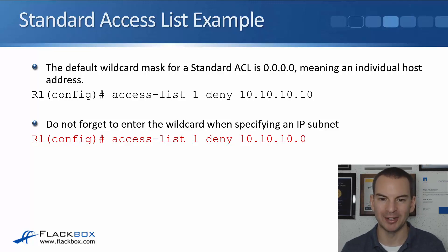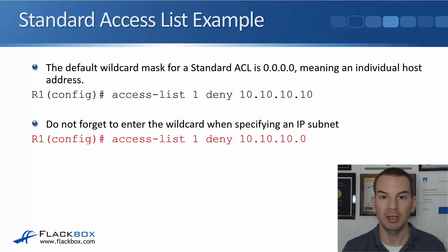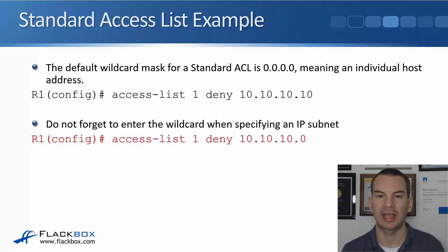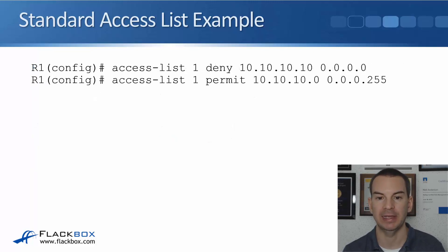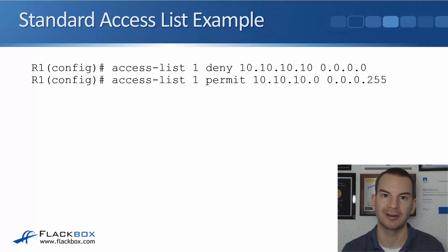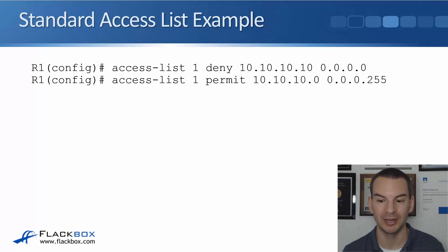Don't forget to enter the wildcard when specifying an IP subnet, not just an individual host. The command line will allow you to enter 'access-list 1 deny 10.10.10.0' with no wildcard mask, but this would not match anything and would be an error. When you're specifying a subnet, like the second line 'access-list 1 permit 10.10.10.0 0.0.0.255', remember to put the wildcard mask in, otherwise it defaults to /32 and won't work.